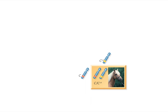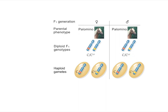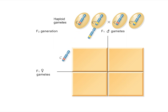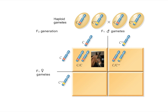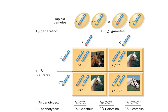Palominos are not true breeding. A cross between two palominos always produces chestnuts, palominos, and cremellos in a 1 to 2 to 1 ratio. Notice that the genotypic and phenotypic ratios are identical. This 1 to 2 to 1 phenotypic ratio is characteristic of a cross between two heterozygous individuals.